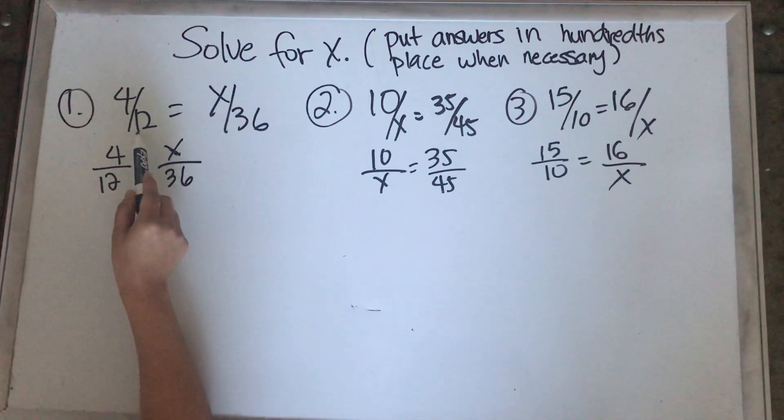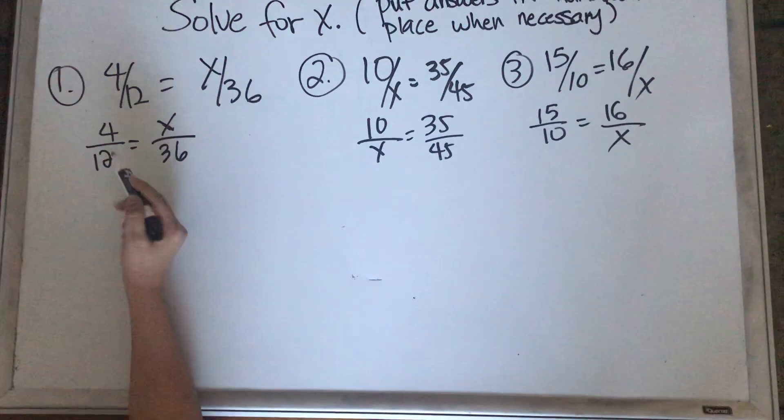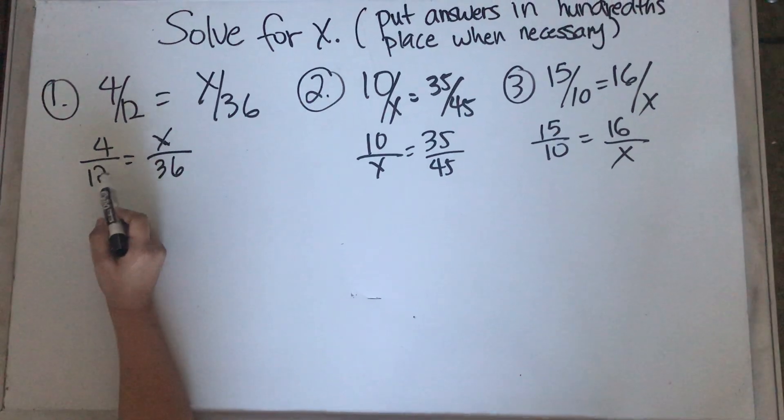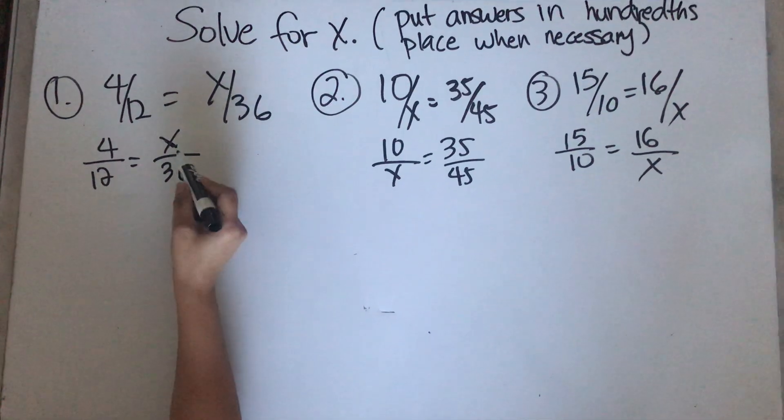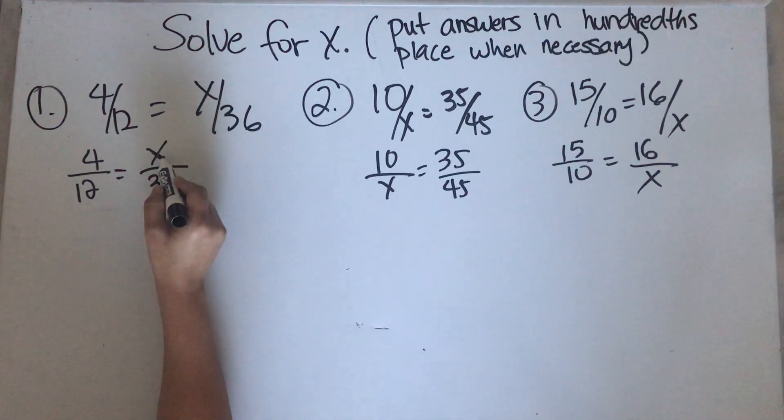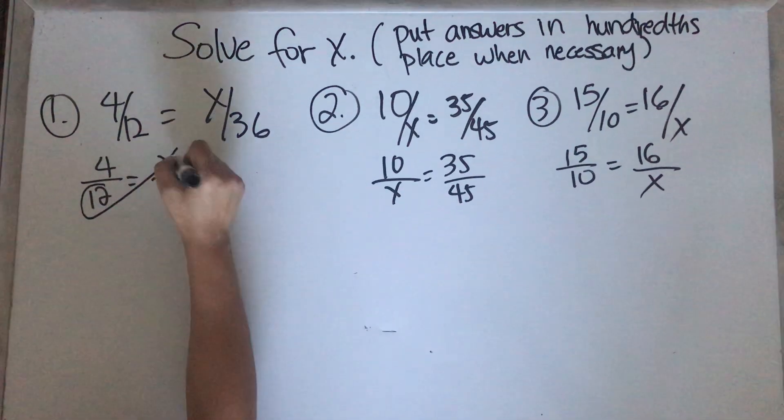So 4 over 12 equals x over 36. So this is how you're going to write it: 4 over 12 equals x over 36. First step, you want to find out where is this x. So you want to cross multiply.